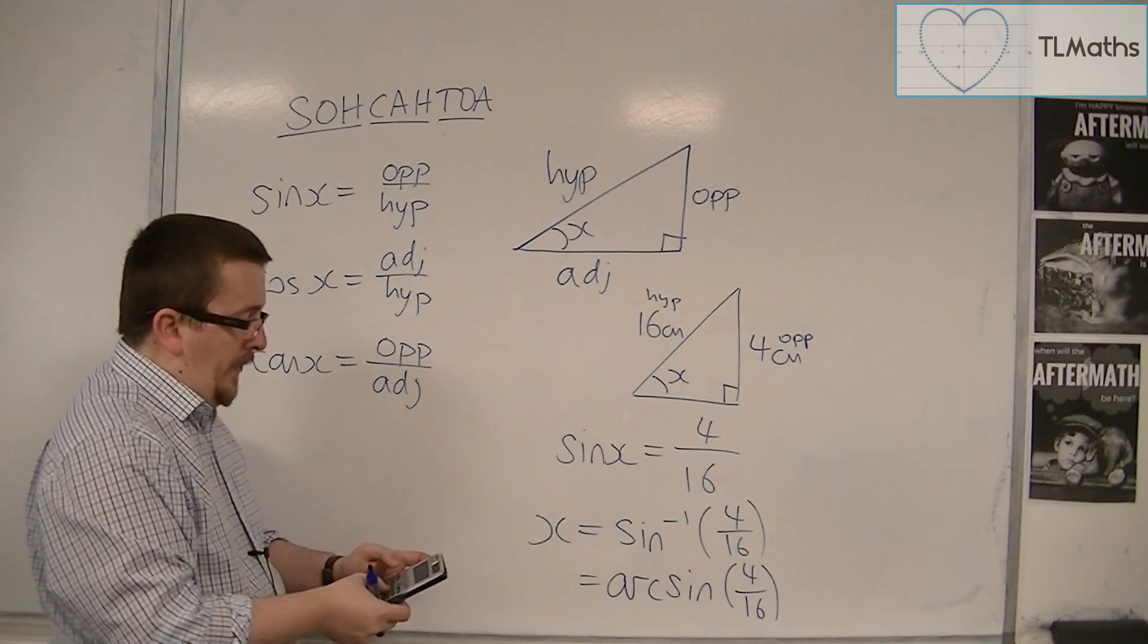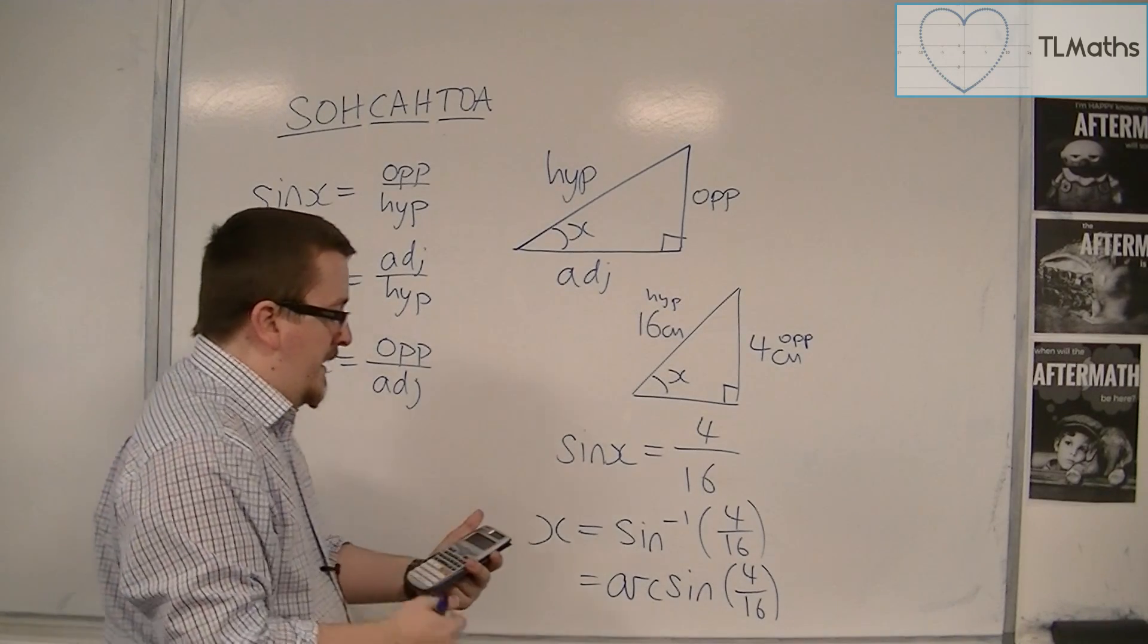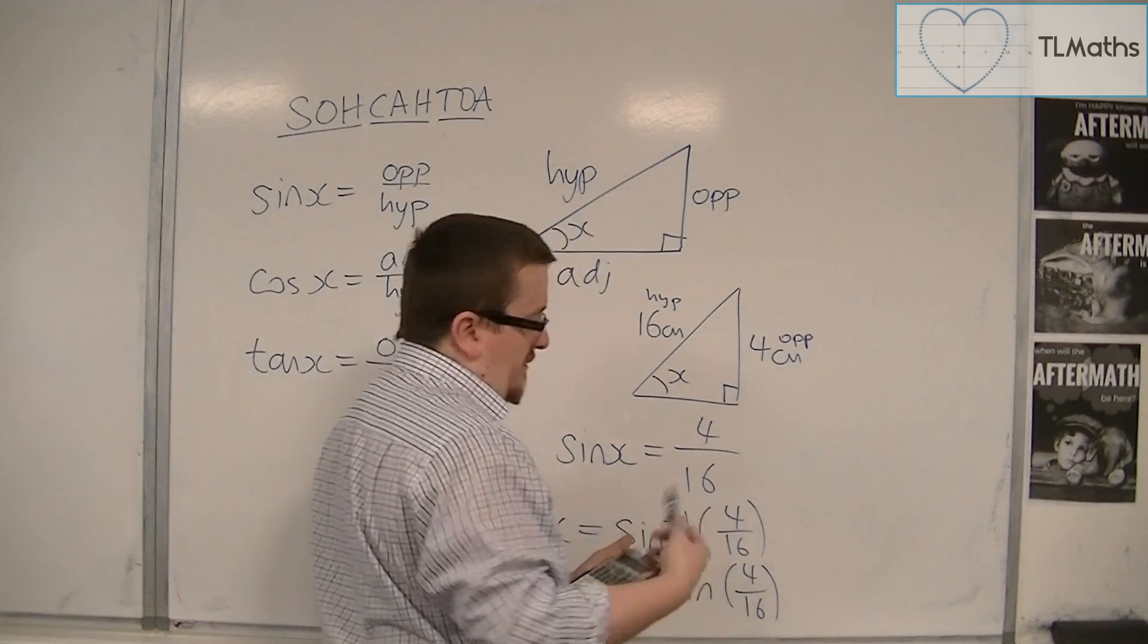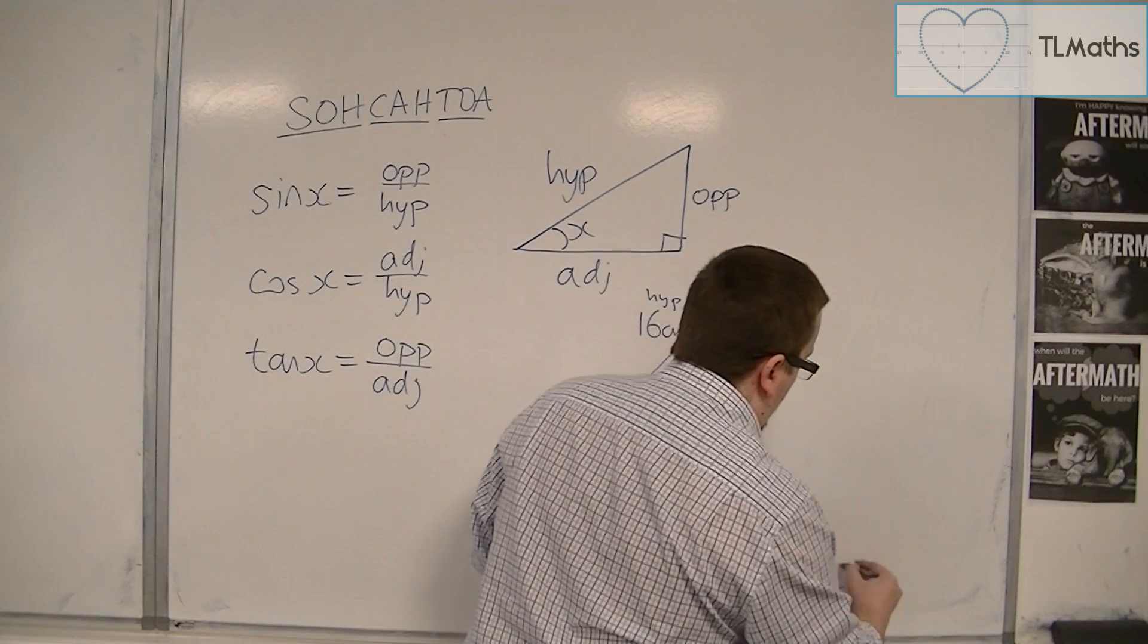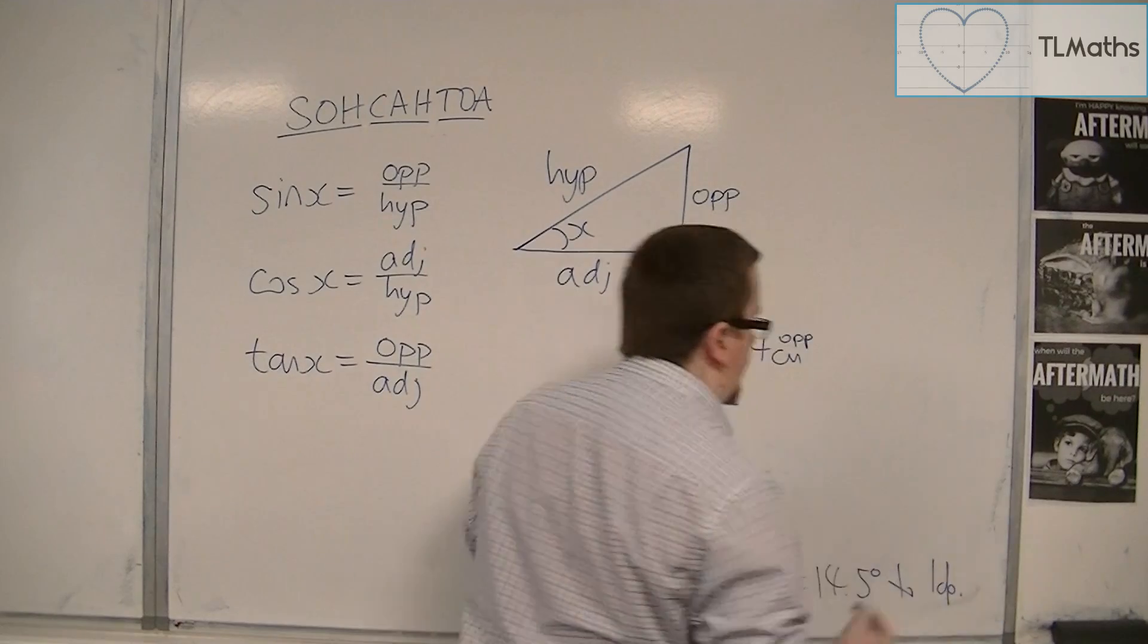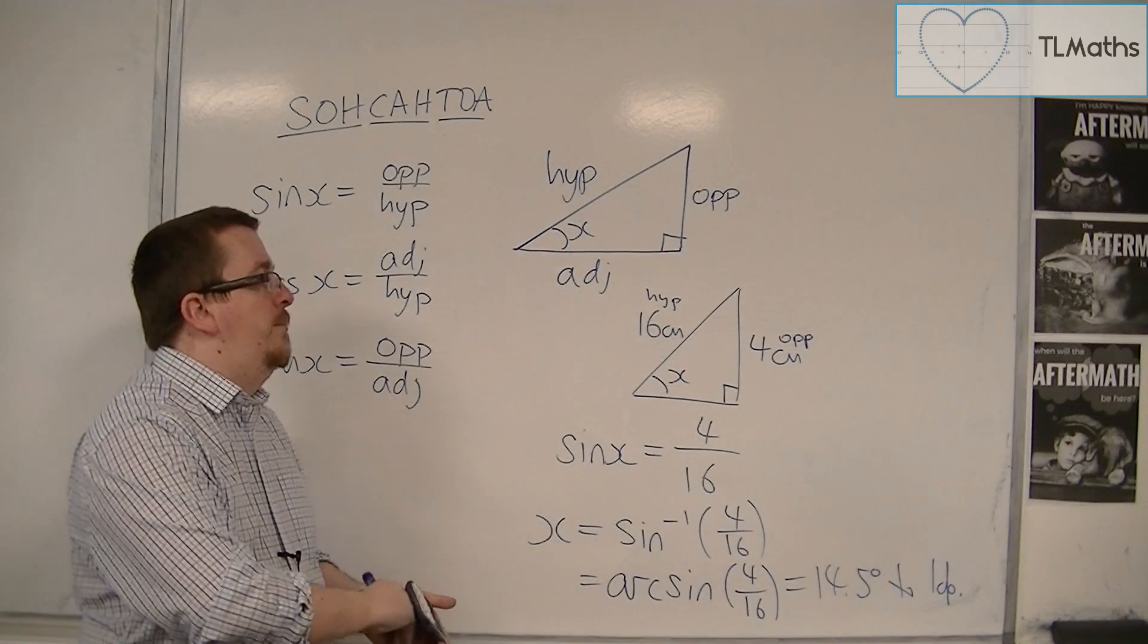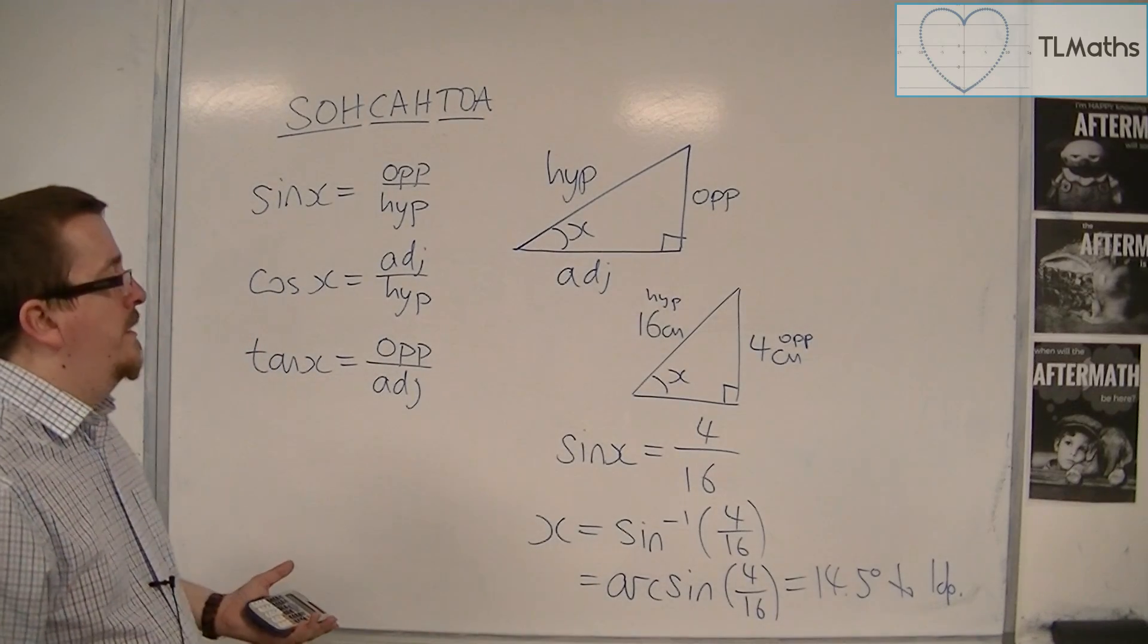So making sure we're in degrees, inverse sine of 4 over 16 gets us 14.5 degrees to one decimal place. And that's like a very basic example of using trigonometry here.